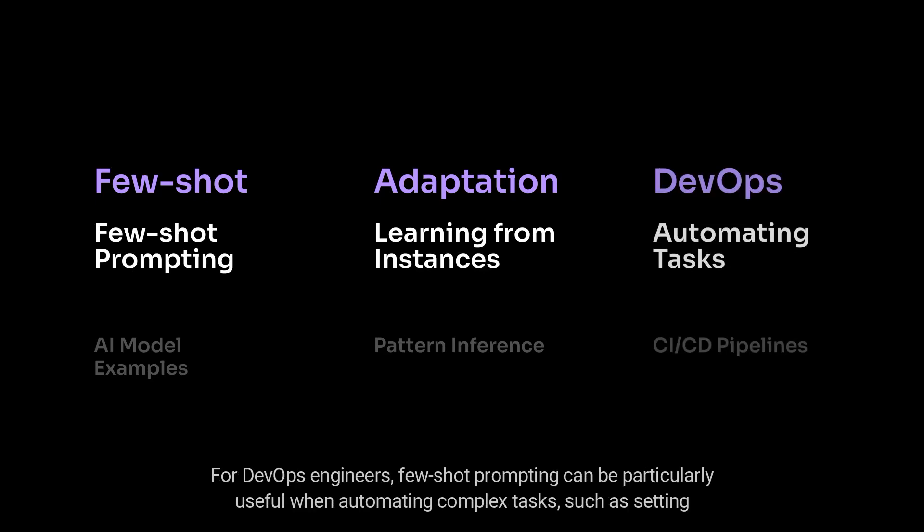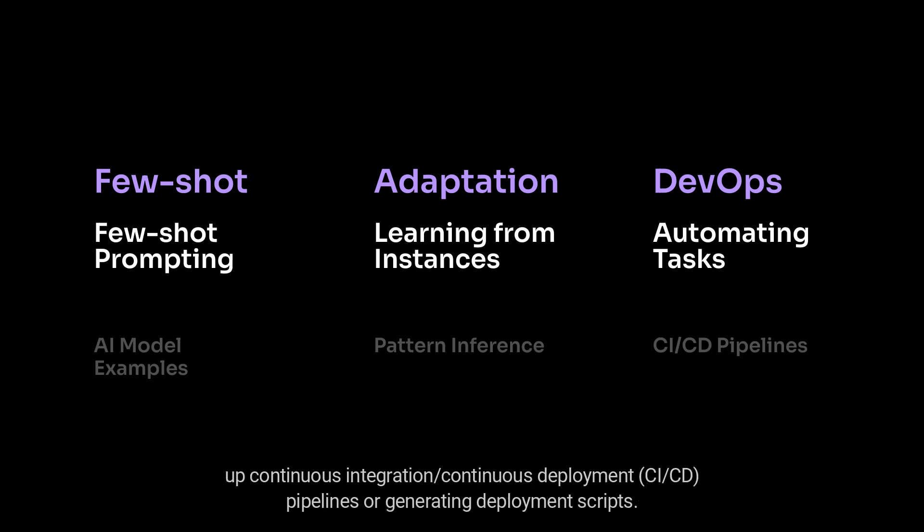For DevOps engineers, Few-shot Prompting can be particularly useful when automating complex tasks, such as setting up continuous integration and continuous deployment pipelines or generating deployment scripts.